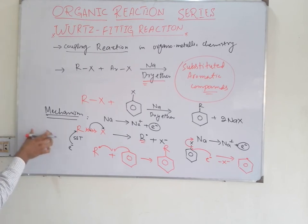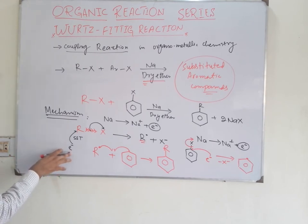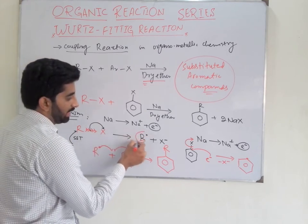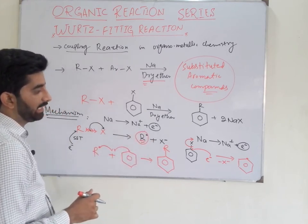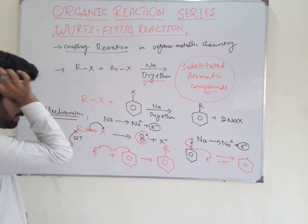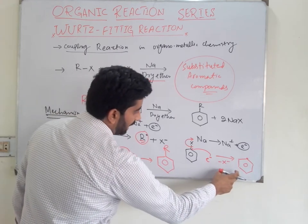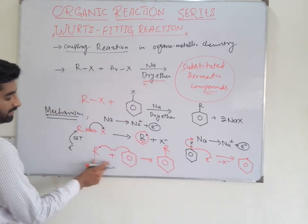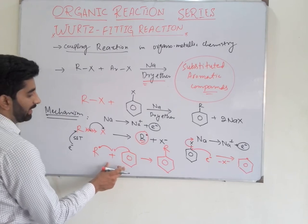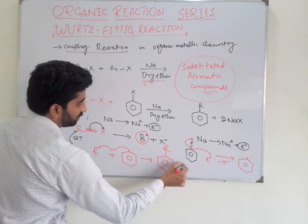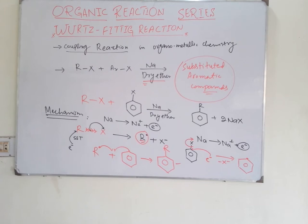This is the free radical mechanism of the Wurtz reaction. Firstly, there is a single electron transfer and formation of an alkyl free radical that is highly reactive and highly unstable. Secondly, there is also formation of an aryl free radical. This alkyl free radical and this aryl free radical react rapidly to give the substituted aromatic compounds.